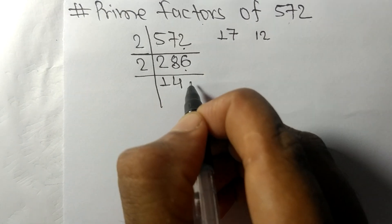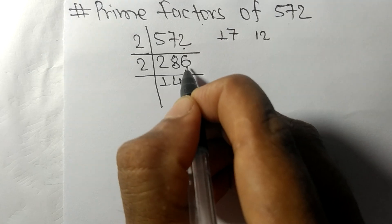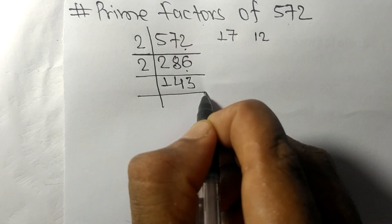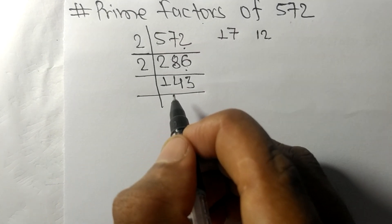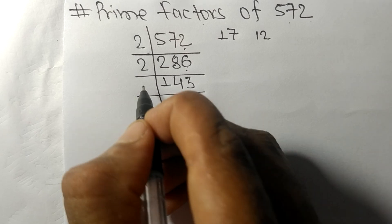So now we got here 143 which is exactly divisible by 11. 11 times 1 means 11, remainder 3, and this 3 gives 33. So 11 times 3 means 33.